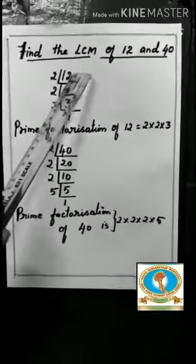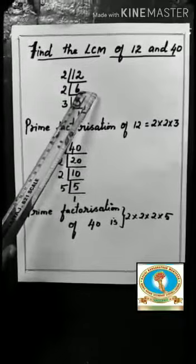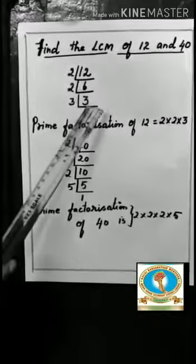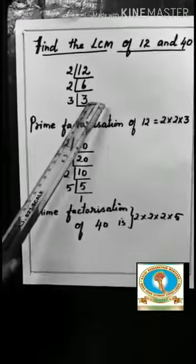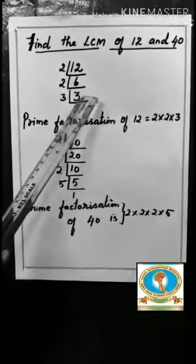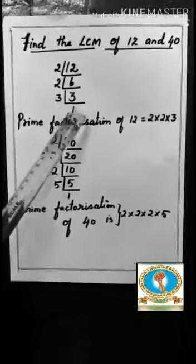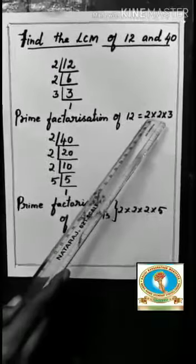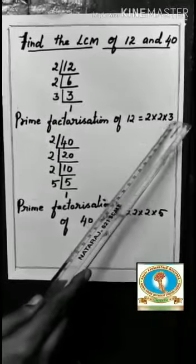2, 6 are 12. Here 6 is an even number so it is divisible by 2. 2, 3's are 6. 3 is a prime number. It is divided by itself. So 3 once are 3. Here the prime factorization of 12 is 2 into 2 into 3.